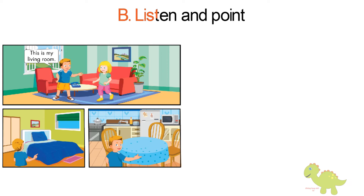B. Listen and point. 1. This is my living room. It's nice. 2. This is my bedroom. Wow. 3. This is my kitchen. I like your house, Bill. Thanks.